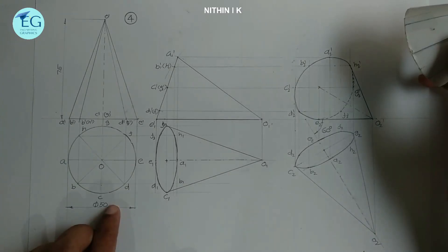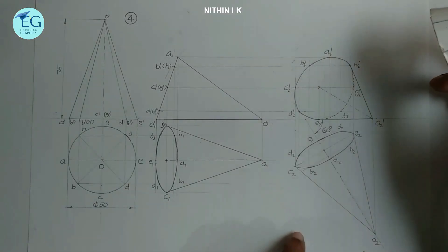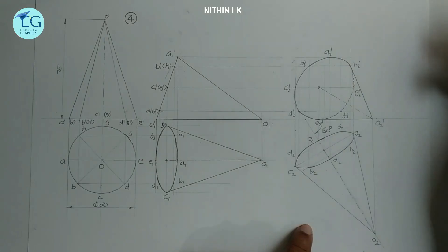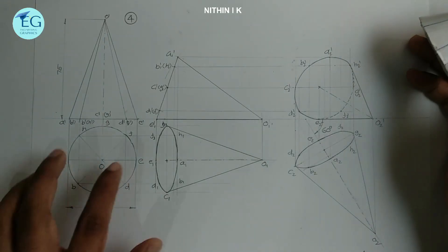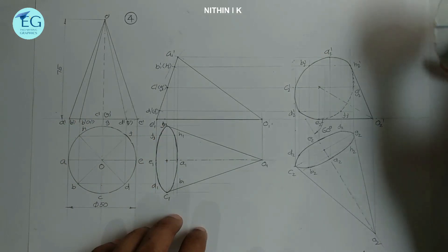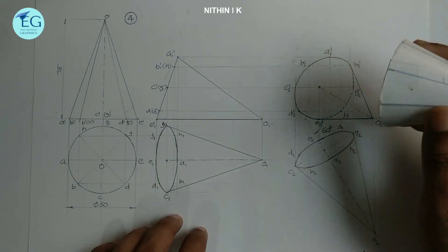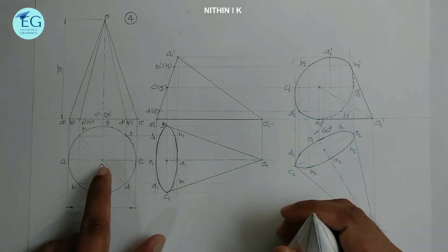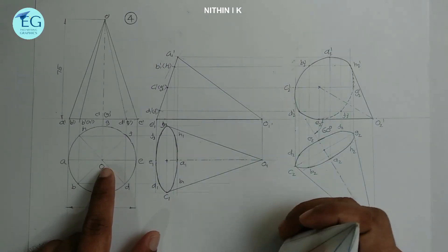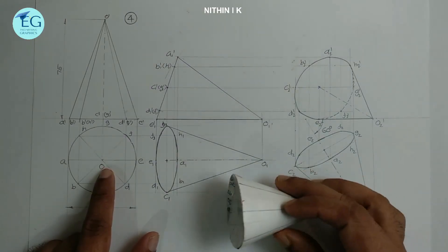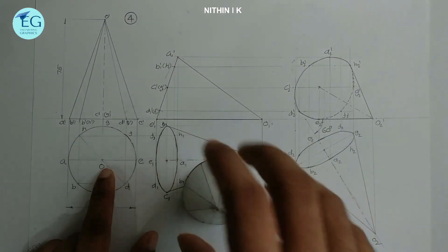Dimensions: diameter 50mm and height 75mm. This is a similar type of problem. This is a simple position — because the resting on a generator on HP is the same condition.